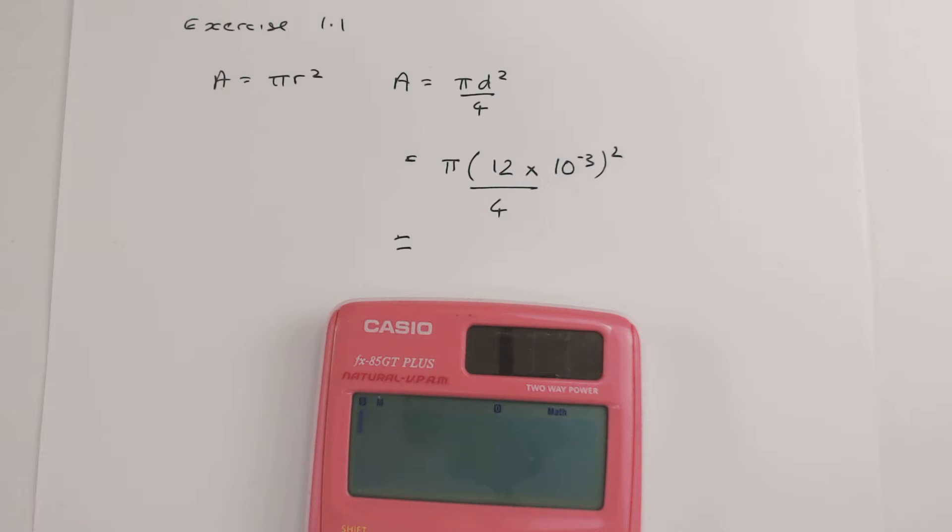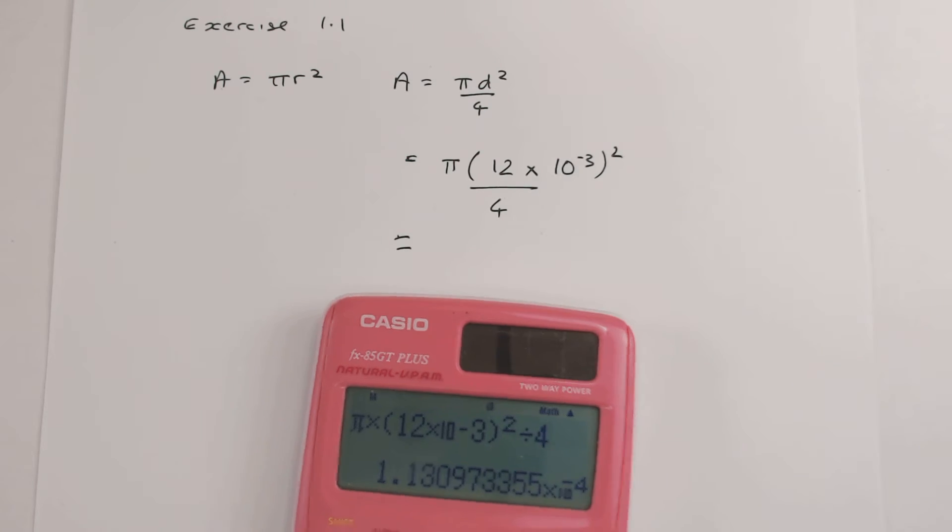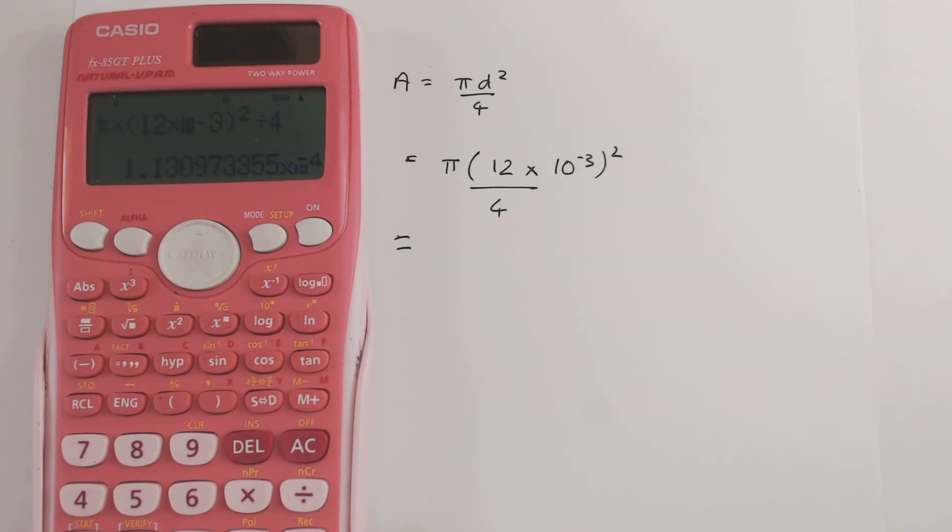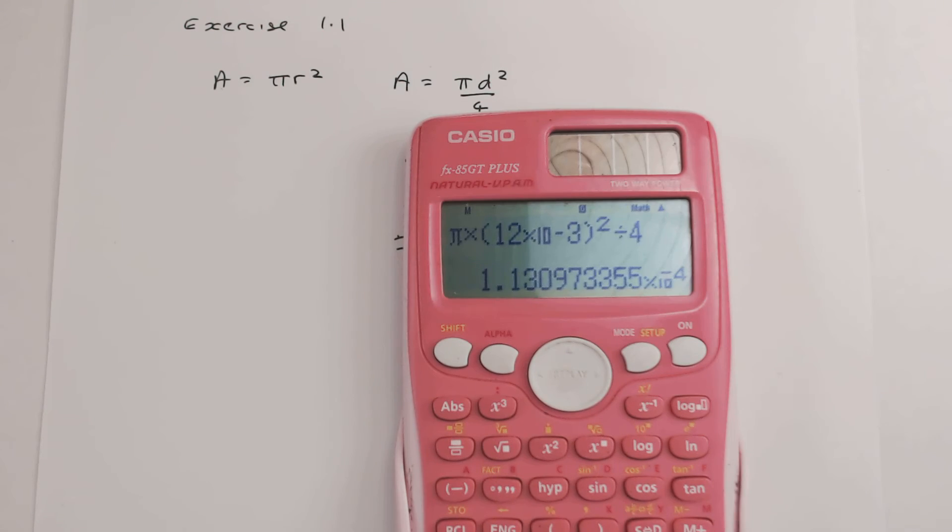First find the pi - shift, pi - times pi, open my bracket, 12, then I'm going to do the power sign for tens of powers down here, and then I use a minus 3, close bracket, square it, divide it by 4, and I get an answer of... can't see that... an answer...